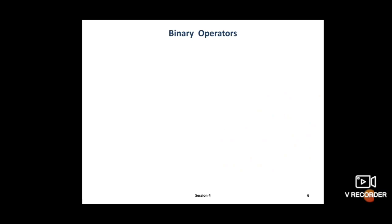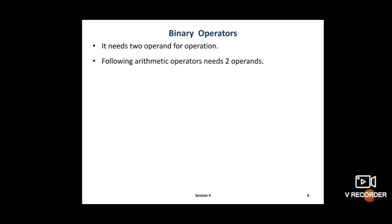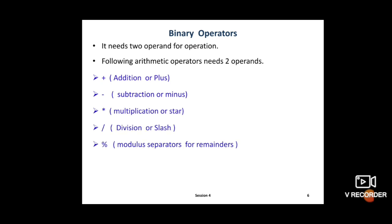Next is the binary operator. What does 'binary' mean? Bi means 2, so binary means it needs 2 operands for the operation. In binary operators, the following arithmetic operators are used: addition (+), subtraction (-), multiplication (*), division (/), and modulus or remainder (%). If the modulus operator is used, then the remainder will be printed.